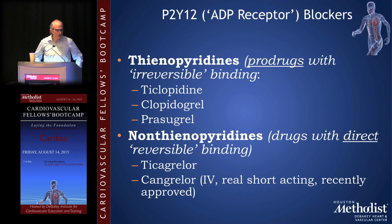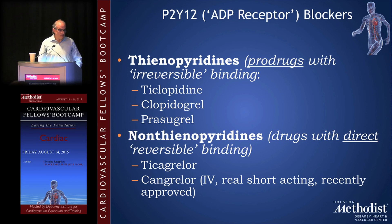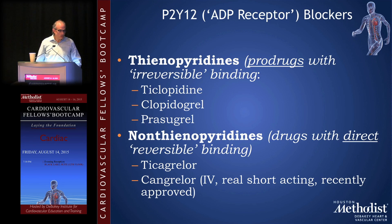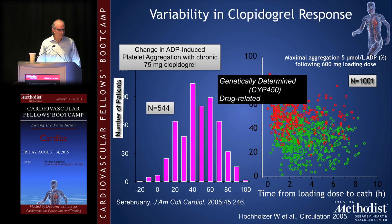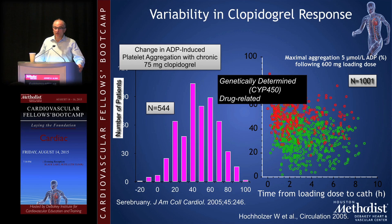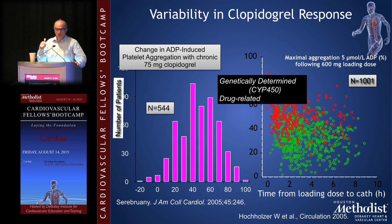Other things about the P2Y12 antagonists: thienopyridines — again, ticlopidine, clopidogrel, prasugrel — are prodrugs with irreversible binding. The non-thienopyridines — ticagrelor and cangrelor — are direct acting. Clopidogrel has a good side and a bad side. If each one of us took 600 milligrams of clopidogrel, we'd all have different platelet responses — there is a very variable response to it.